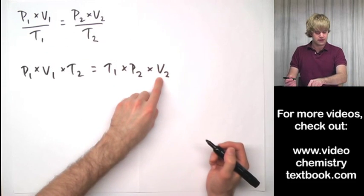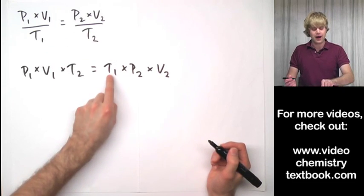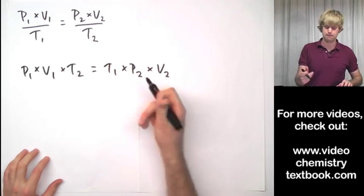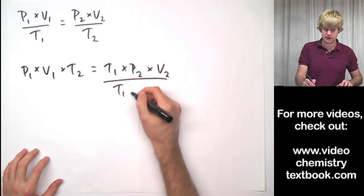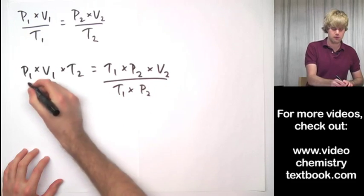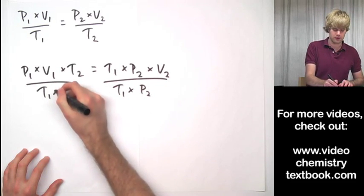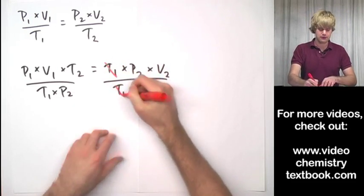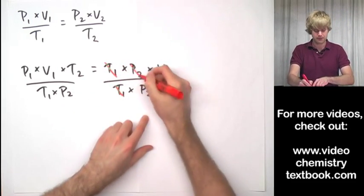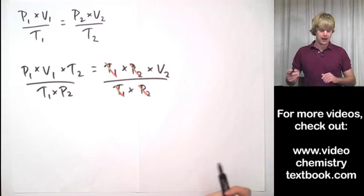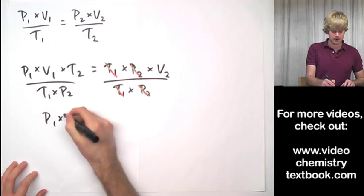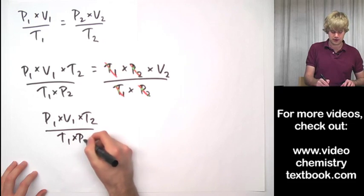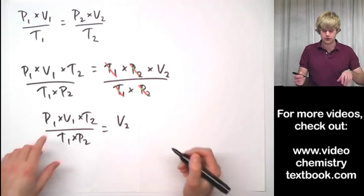Now we want to get V2 by itself, so let's divide by T1 and by P2 to get rid of those from this side of the equation. These guys are going to cancel out: T1 over T1, P2 over P2. And we're left with P1 times V1 times T2 divided by T1 times P2 equals V2.